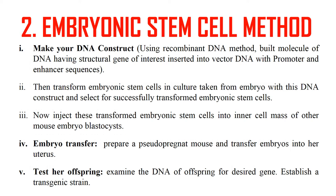The next method of producing transgenic animals uses embryonic stem cells. First, we make our DNA construct containing the gene of interest, along with a vector that has all the elements to express the gene — that is, promoter, enhancer, terminator, etc. This complete DNA construct is then used to transform embryonic stem cells in culture, which are taken from the embryo.